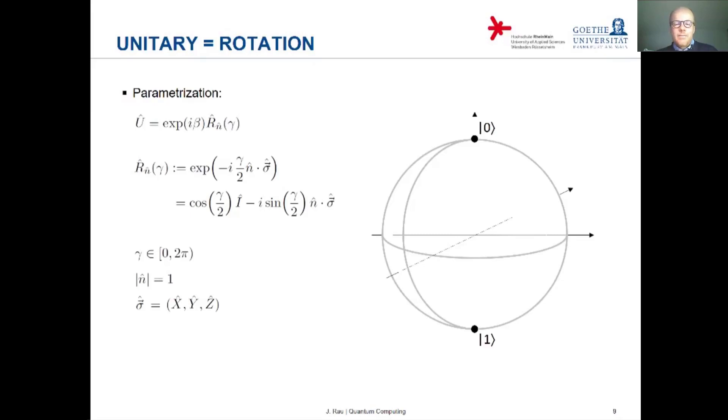Then I claim, and again, this is a homework problem, this is on your problem set, that this unitary transformation can be visualized as a rotation on the Bloch sphere. Well, let me show you exactly how this looks like. You have an arbitrary state psi on the surface of your Bloch sphere, then you apply the unitary operator, and this takes you to another pure state, the transformed state, u psi.